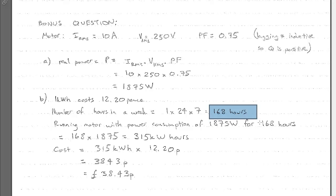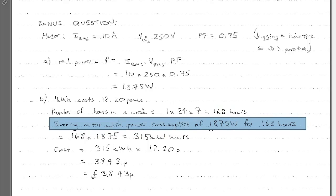So that's how many hours our motor is going to be running for. So we need to find out how much it's going to cost us to have this going. So to summarize, we are running a motor with a power consumption of 1,875 watts for 168 hours.